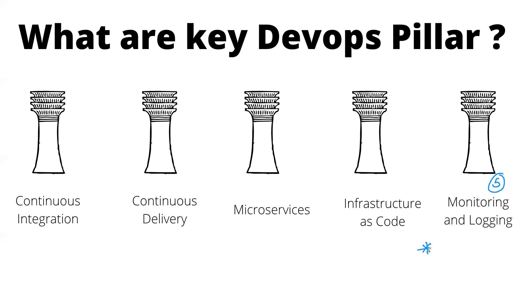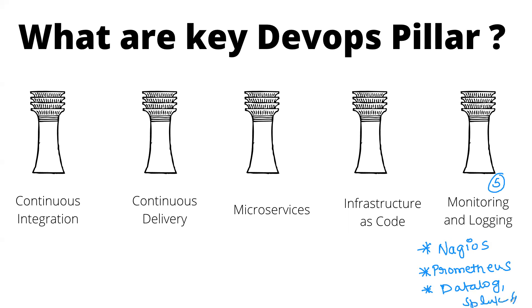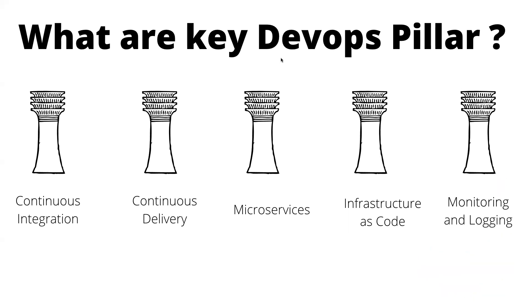The last pillar is monitoring and alerting. It is a very vast topic. You can learn Nagios or Prometheus — Prometheus being the most famous one. If your organization uses paid services, there are options like Datadog and Splunk. But if you're a beginner, start with Nagios or Prometheus, and make sure you are aware of this concept.